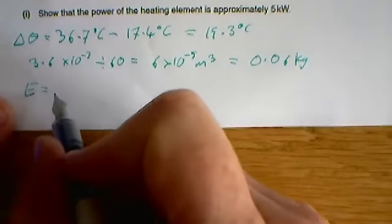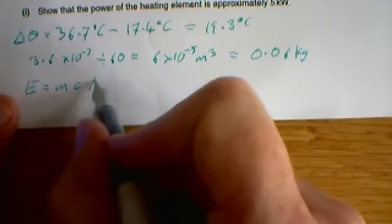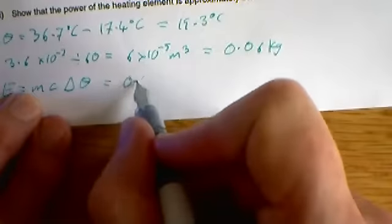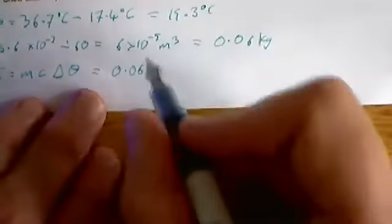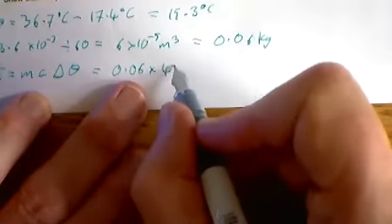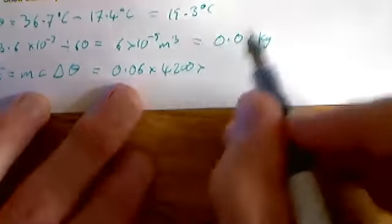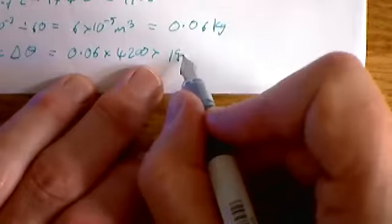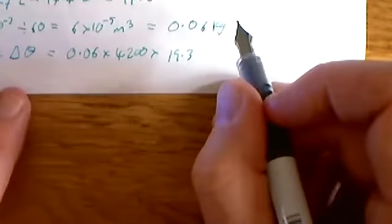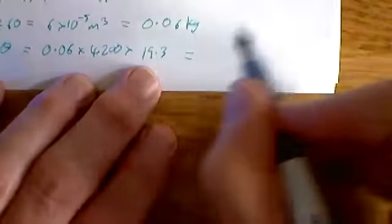So the energy is going to be mc delta theta. The mass is 0.06 kilograms. Specific heat capacity of water is 4200. The change in temperature is 19.3. Multiply those together and we get an answer.